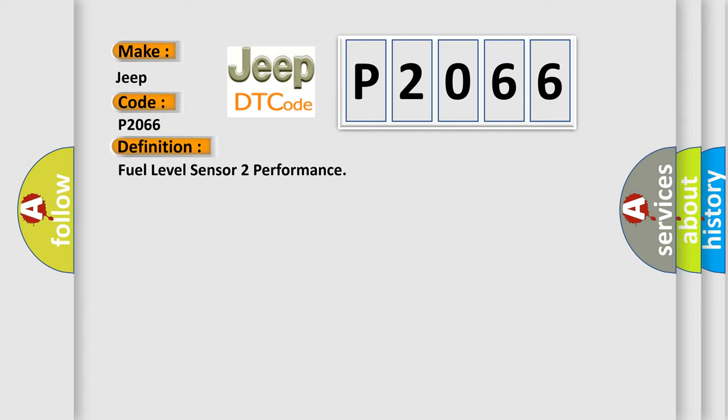The basic definition is Fuel Level Sensor 2 Performance. And now this is a short description of this DTC code.